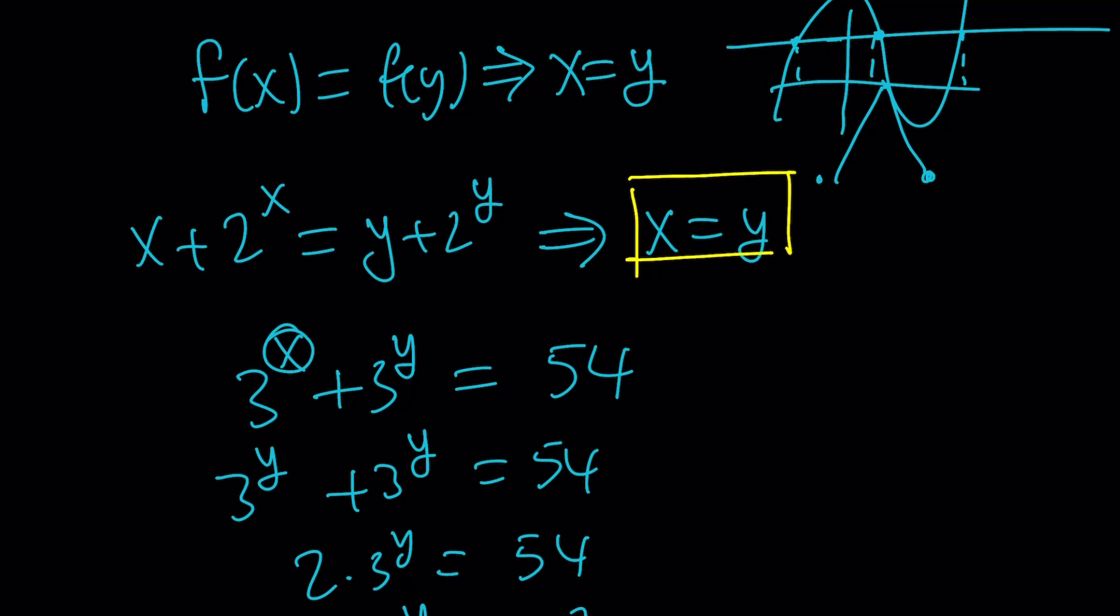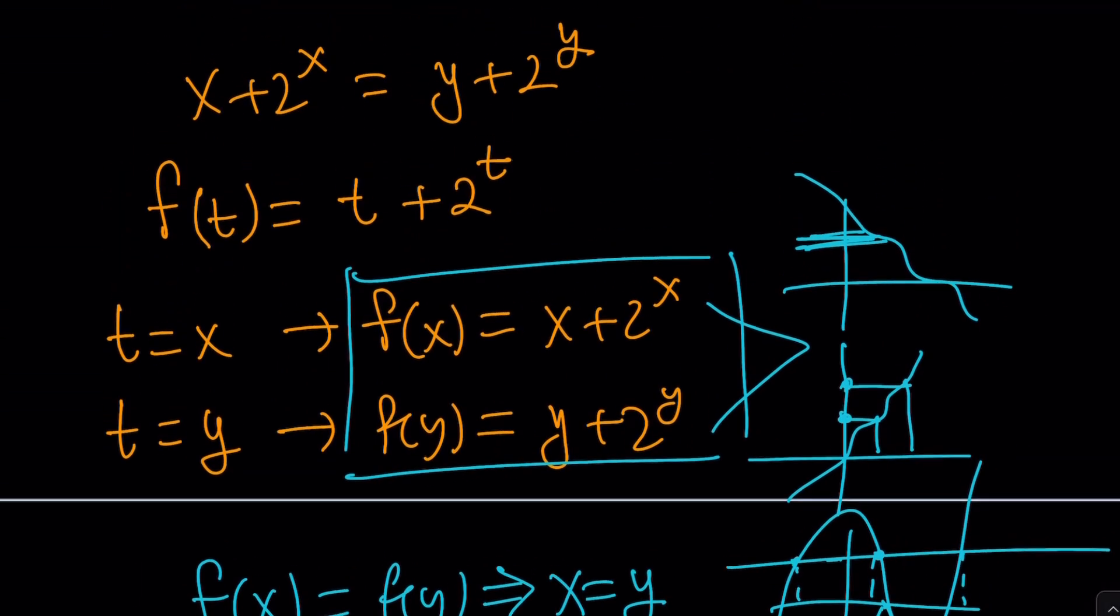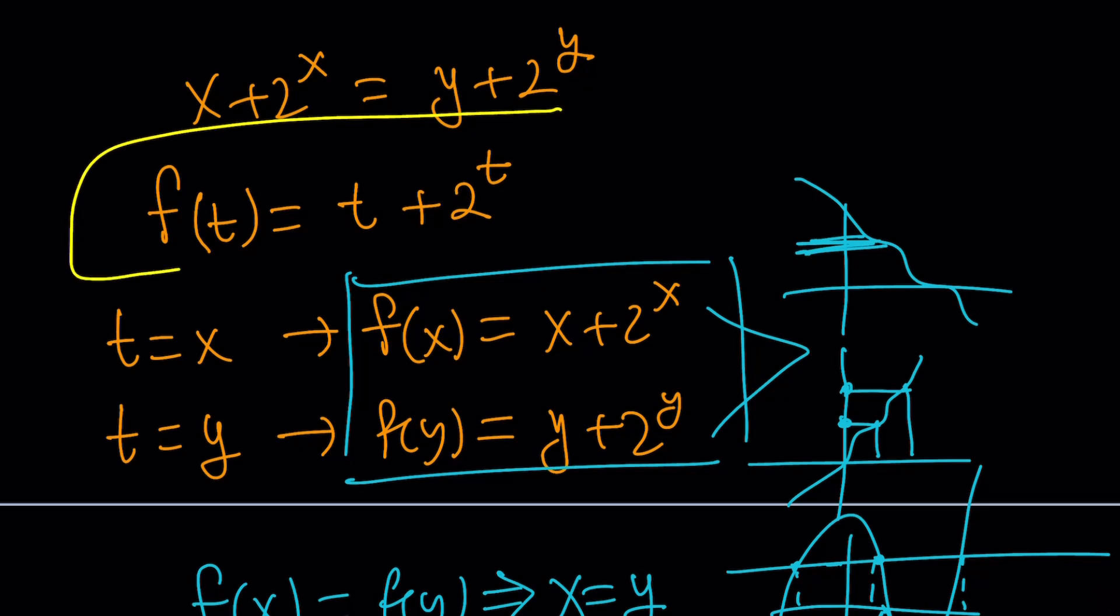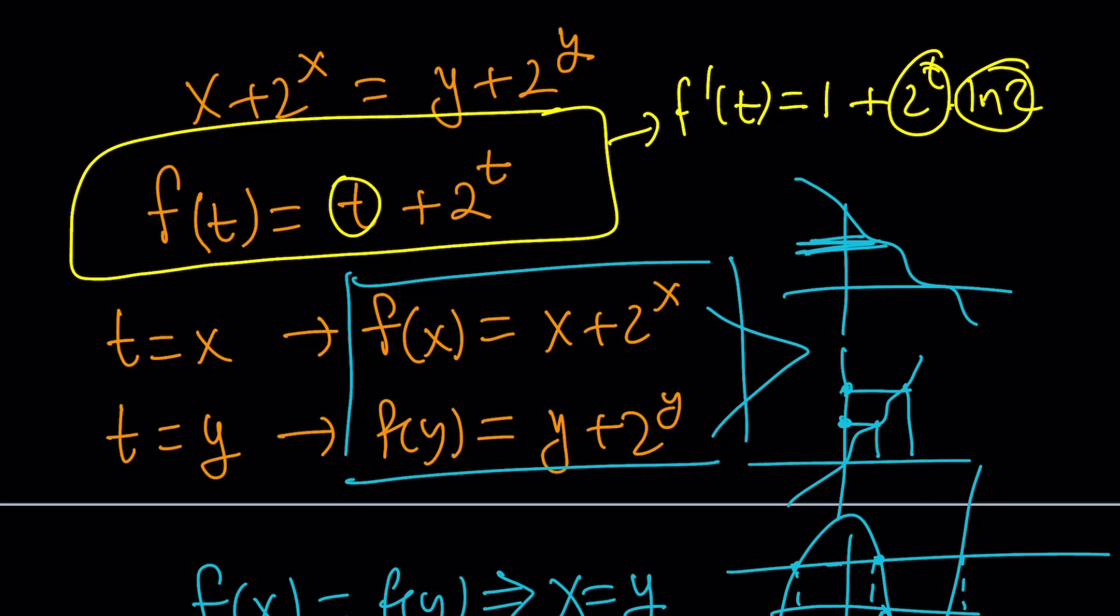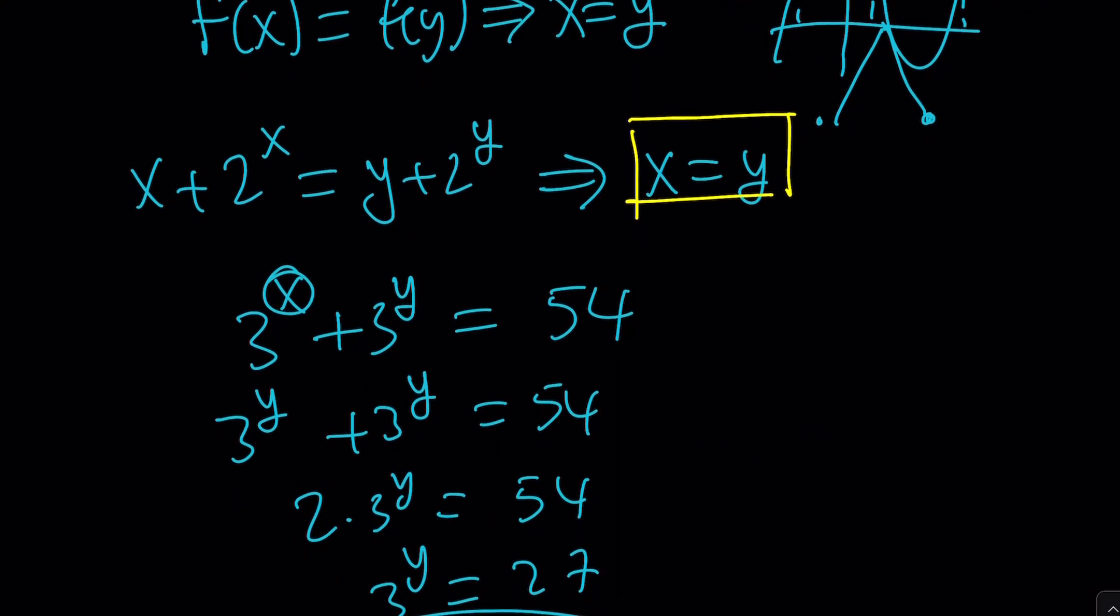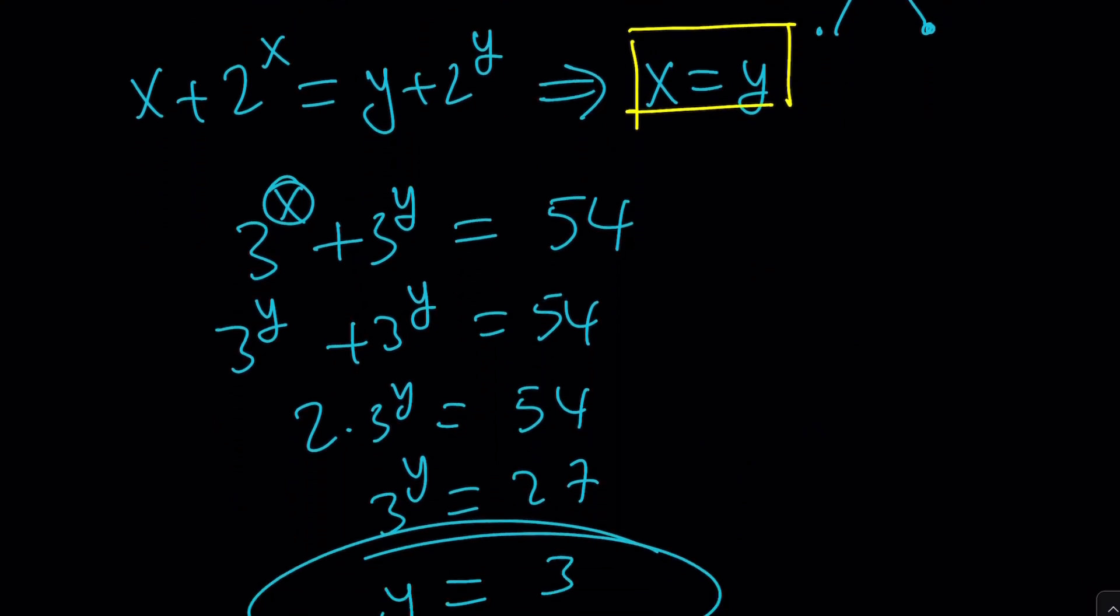Our function f(t) = t + 2^t is one-to-one. It's always increasing. You can tell by looking at the derivative. The derivative of t is 1, and the derivative of 2^t is 2^t ln(2). This is positive, this is positive all the time. The first derivative is positive, which means f(t) is always increasing. This means it's one-to-one or injective.